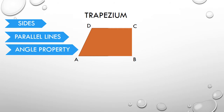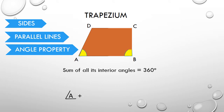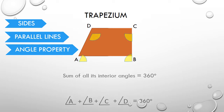And it has the angle sum property of a quadrilateral also. That is, sum of all its interior angles is equal to 360 degrees. Angle A plus angle B plus angle C plus angle D is equal to 360 degrees.